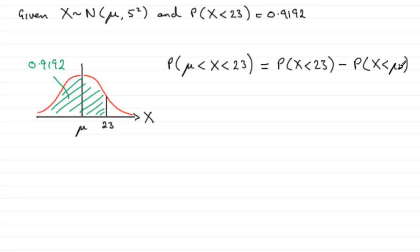We worked it out as 16 in the previous part, but it doesn't really matter what mu turned out to be. It's at this midpoint here, so we know the probability of being less than it is 0.5. So the area in here has got to be equal to 0.9192 minus 0.5.